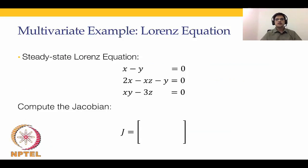Let us look at the steady-state Lorentz equations. The steady-state Lorentz equation is of the form: x minus y = 0, 2x minus xz minus y = 0, and xy minus 3z = 0. In computing the Newton-Raphson method for the multivariable case, we need to compute a Jacobian.